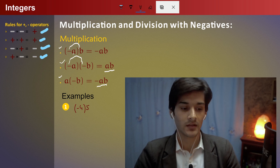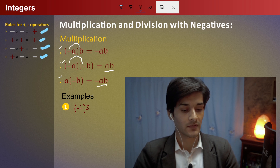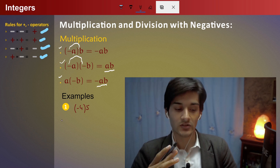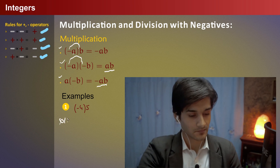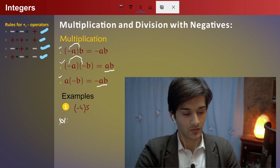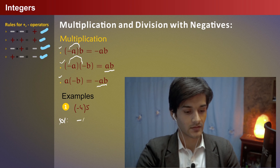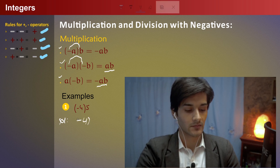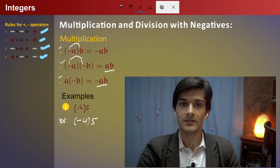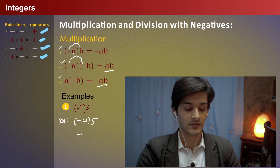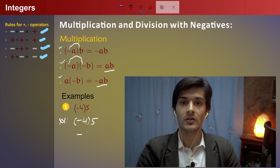Example number one: minus four multiplied by five. For the solution, the given question is minus four multiplied by five. Minus of plus is minus. Four multiplied by five is equal to twenty, so the answer is minus twenty.